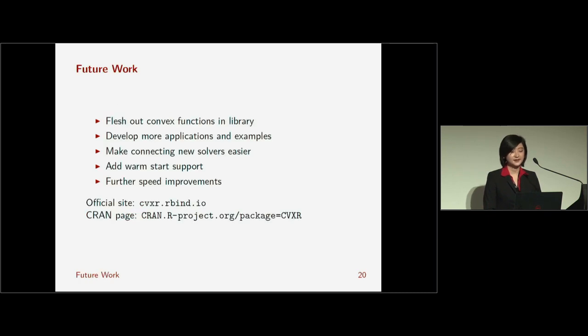So that's it. Future work for CVXR. Well, we're going to flesh out some of the convex functions or atoms in the library. We'll definitely develop more applications and examples. You can find a very large list of examples and vignettes on our markdowns. You can run them right on your computer at our official website, cvxr.rbind.io, or in the CRAN package itself.